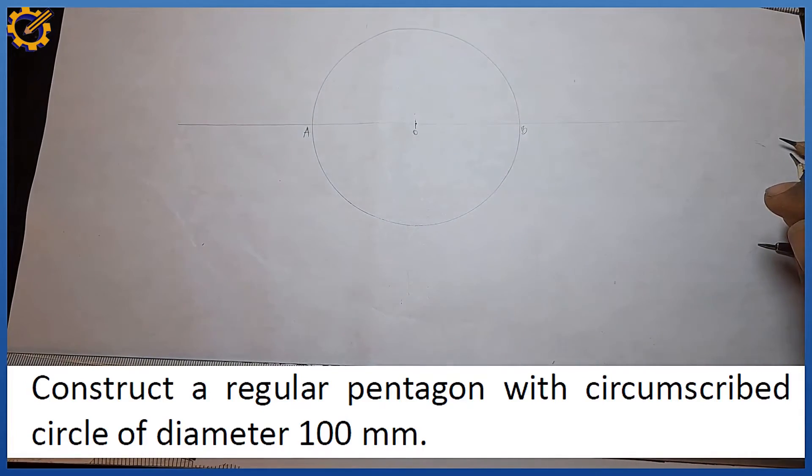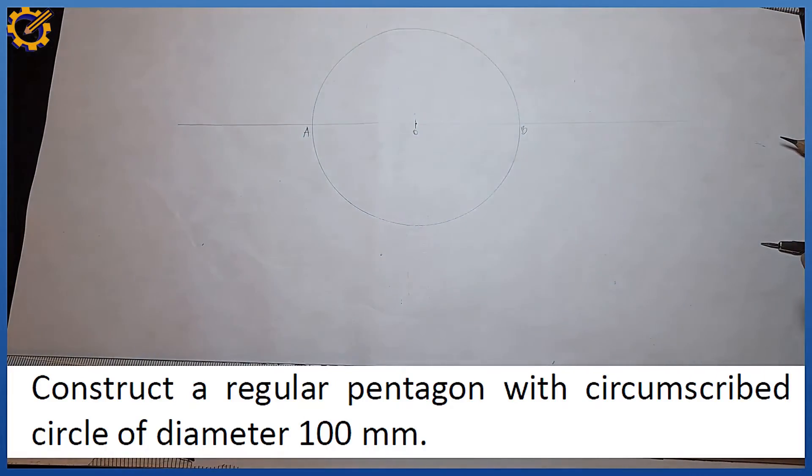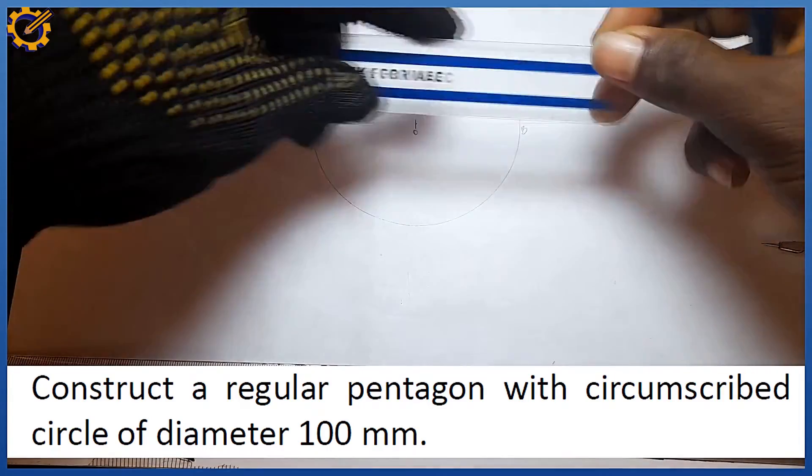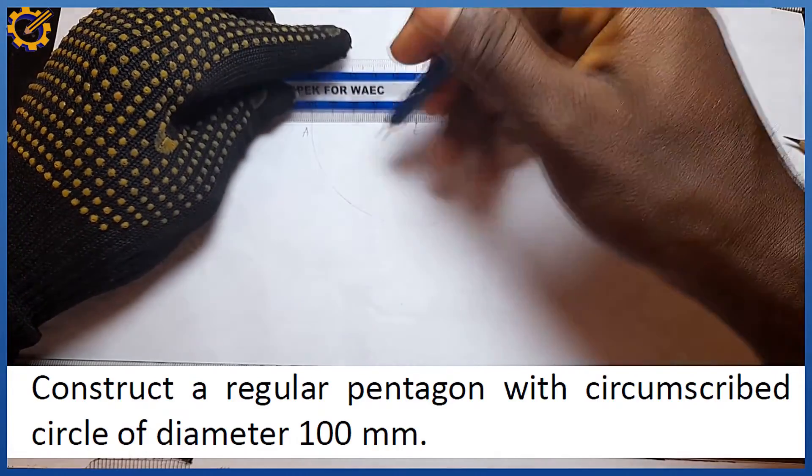Since we're producing a pentagon using a circumscribed circle, the next step is to divide the distance between mark A to B into five equal parts. Since 100 is actually an even number and can be divided by five easily, each of the marks will be 20mm.